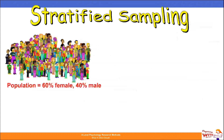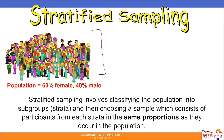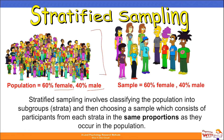Then we have stratified sampling. You can see that the entire population here is made up of 60% female and 40% male. Stratified sampling involves classifying the population into subgroups called strata — in this case female and male — and then choosing a sample with participants from each stratum in the same proportions as they occur in the population. If we had a sample of 10 individuals, we would ensure 60% are female and 40% are male to reflect the wider population.